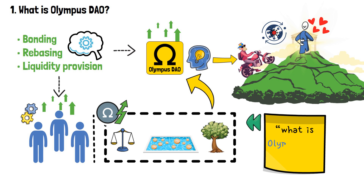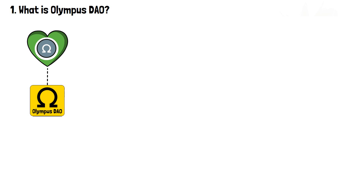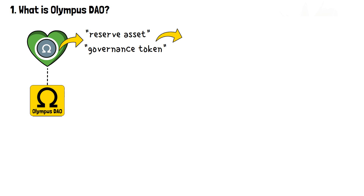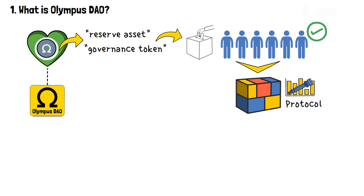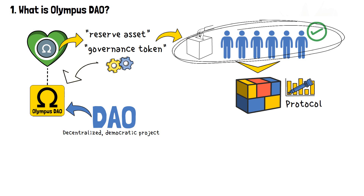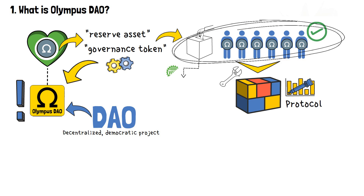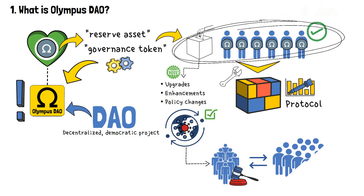At the heart of the Olympus DAO model lies the OM token. OM functions as both a reserve asset and a governance token, conferring voting rights to its holders, allowing them to actively shape the future direction of the protocol. That's where the DAO in Olympus DAO comes from — it's a decentralized democratic project. OM token holders have the power to shape the trajectory of the protocol, proposing and voting on various upgrades, enhancements and policy changes. This decentralized governance framework ensures a collective decision-making process that aligns with the interests of the community.